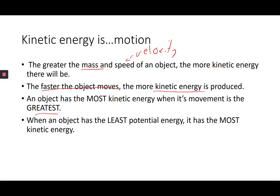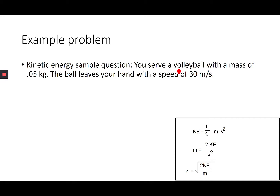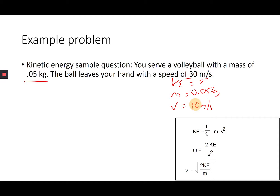Here's our kinetic energy equation, and there are different ways of deriving it using the formula triangle. Sample problem: you serve a volleyball with a mass of 0.05 kilograms and the ball leaves your hand at 30 meters per second. What do we know? Kinetic energy is unknown, mass is 0.05 kilograms, and velocity is 30 meters per second.